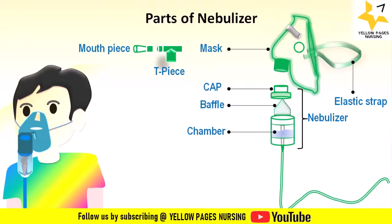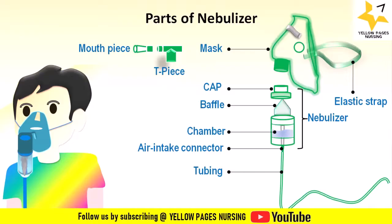The mask is connected to a length of flexible tubing that extends to the nebulizer chamber, allowing the aerosolized medication to travel from the nebulizer to the mask for inhalation. The connector is the interface between the nebulizer chamber and the tubing, ensuring the aerosolized medication flows into the tubing and ultimately to the mask. Optionally, some nebulization masks have an oxygen inlet that allows oxygen to be mixed with the aerosolized medication, particularly used for patients who require both nebulized medication and oxygen therapy.